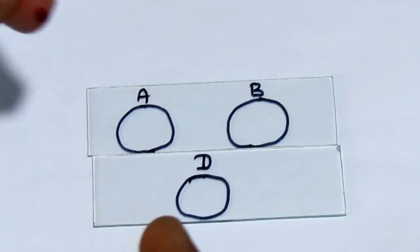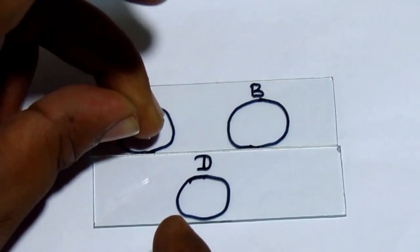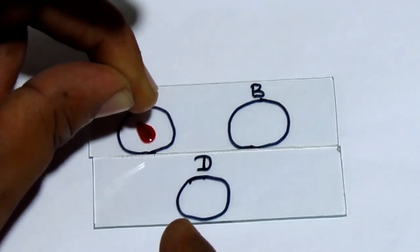Now put two to three drops of blood respectively on the positions marked on the slide.